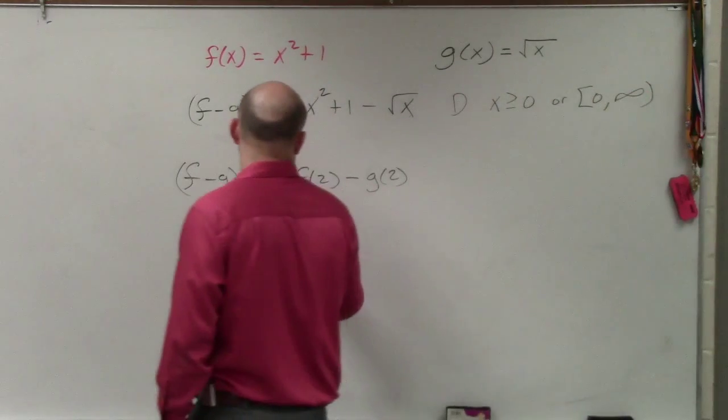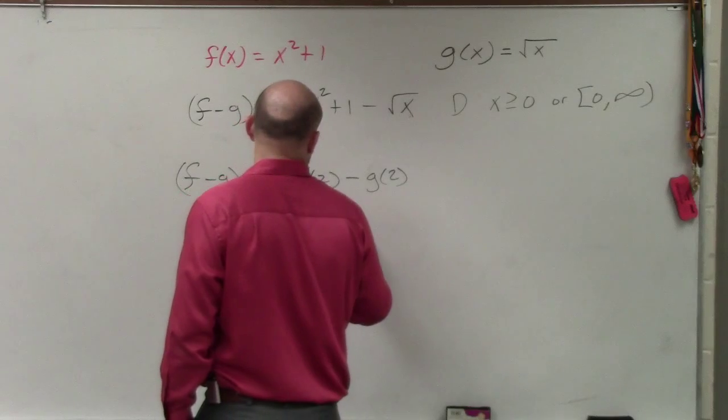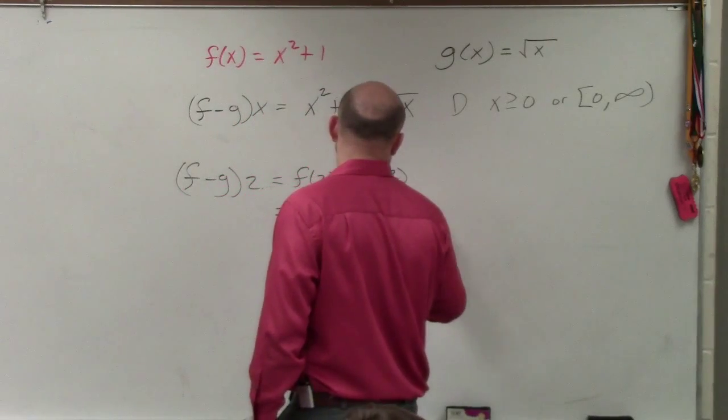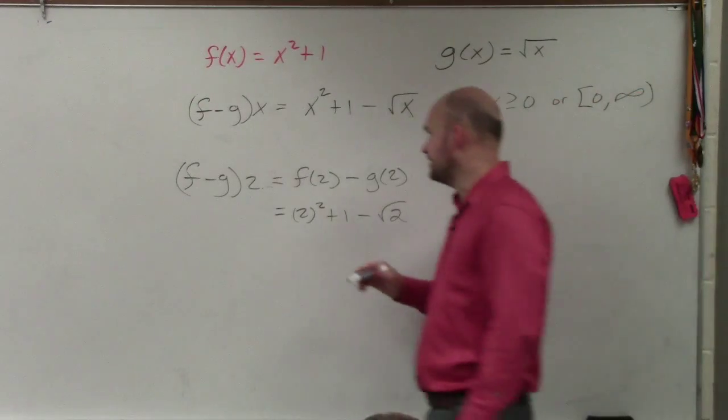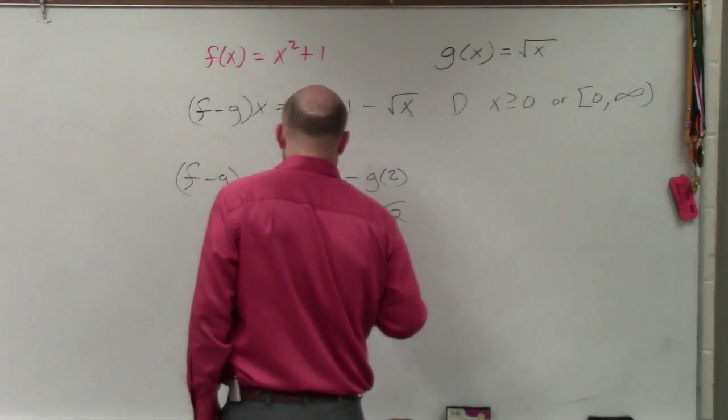So it's really 2² + 1 minus the square root of 2. Well, 2 squared is 4, 4 plus 1 is 5. So it's 5 minus the square root of 2.